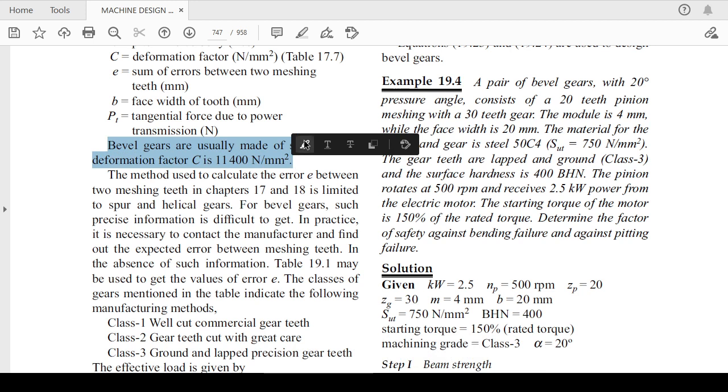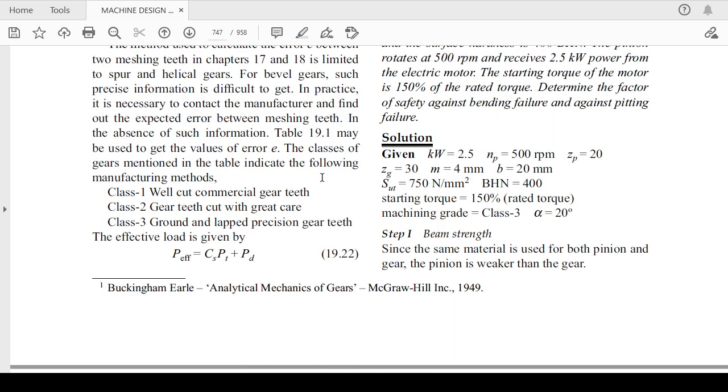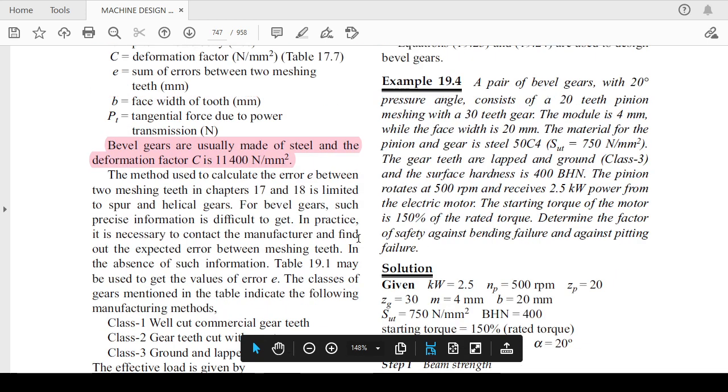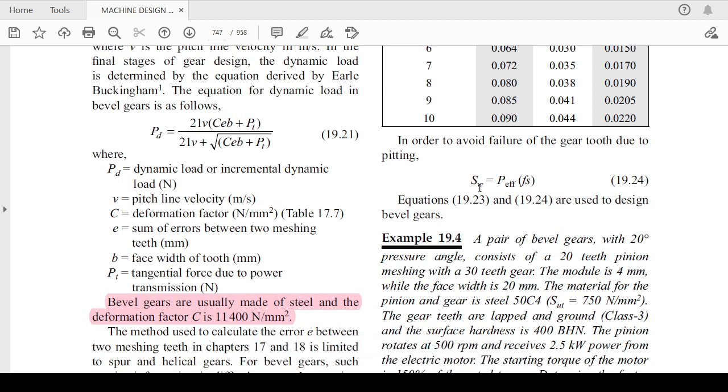They have also given the value of C, which is 11,400 Newton per mm square if bevel gears are made up of steel. P effective can also be rewritten if this incremental dynamic load comes in the picture as C_s plus C_s P_t plus P_d.